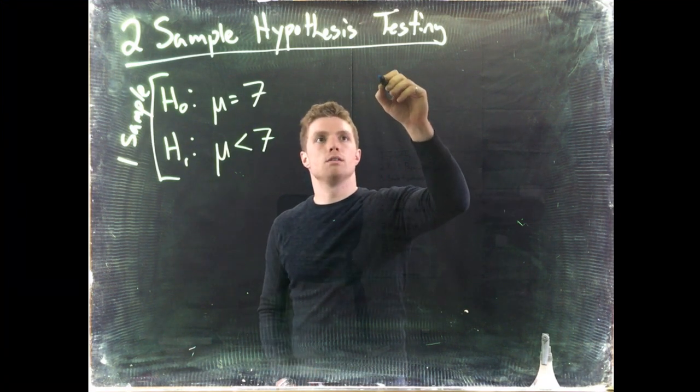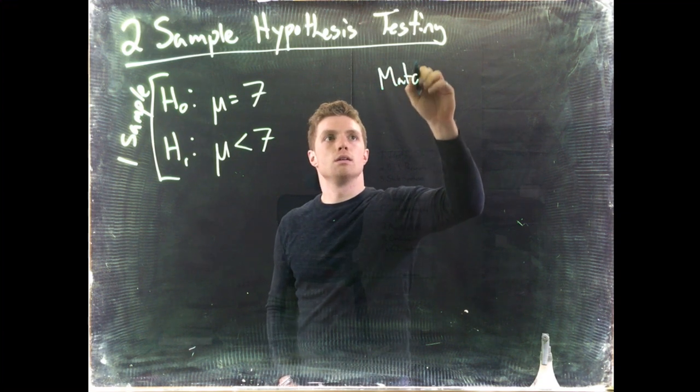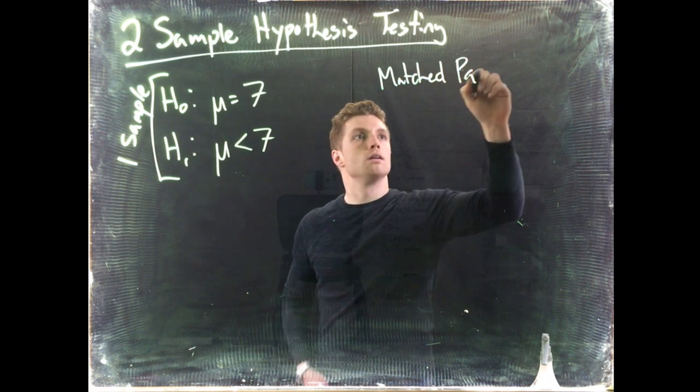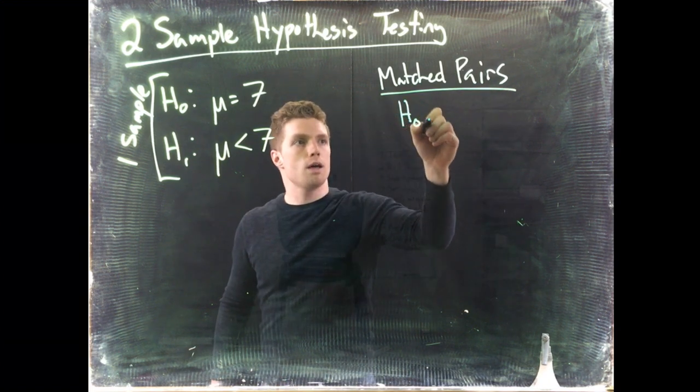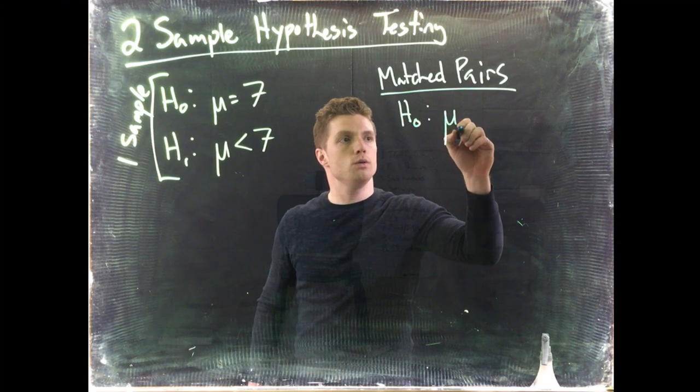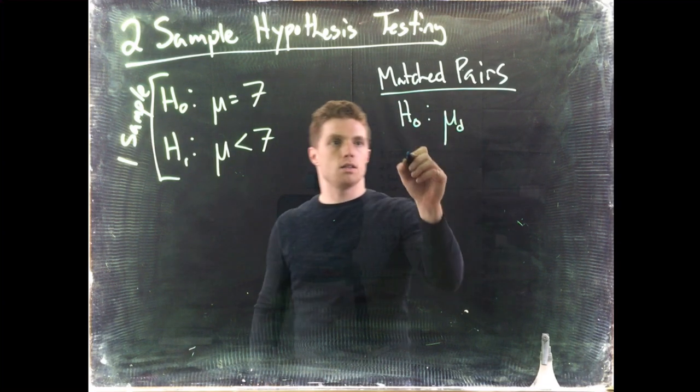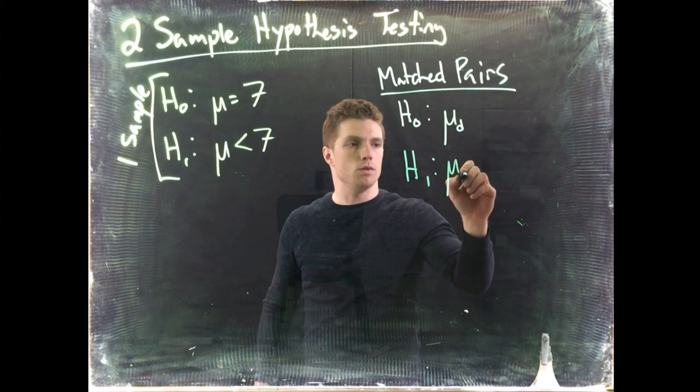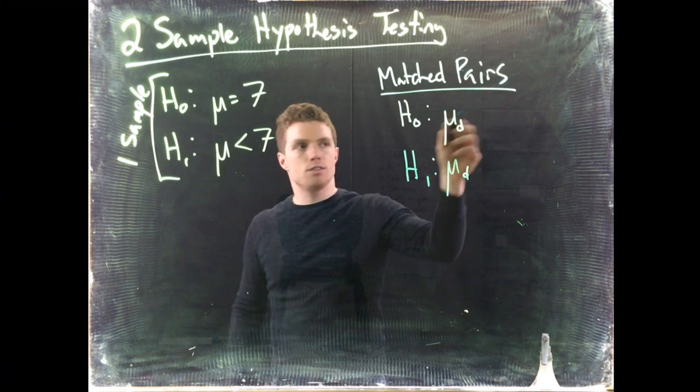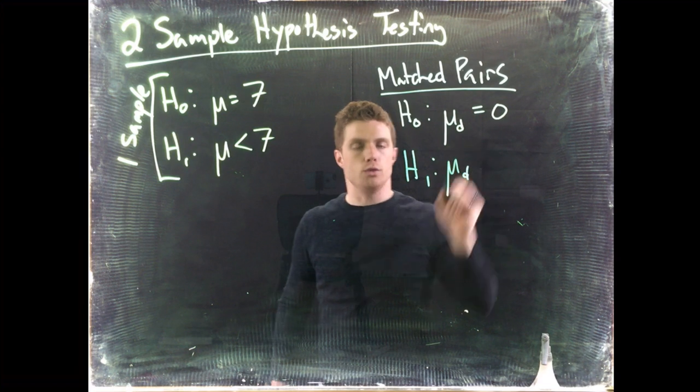So matched pairs is going to look like this. The null hypothesis, we're going to start off by saying μ sub d. Okay, and then the alternative hypothesis is still going to be μ sub d. And the baseline assumption is that this is going to be equal to zero.